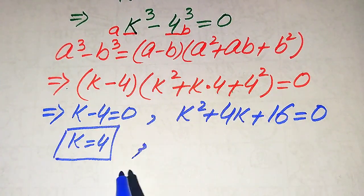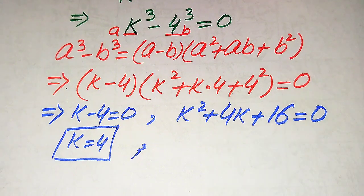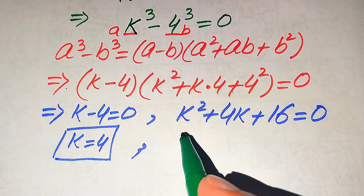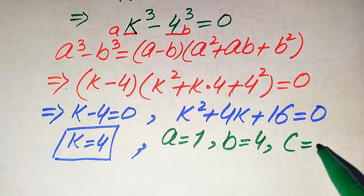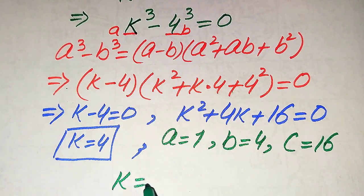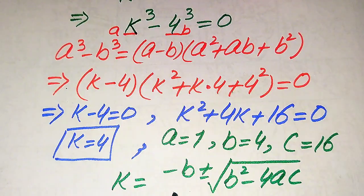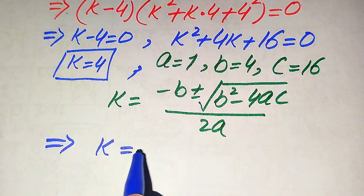The equation k squared plus 4k plus 16 equals 0 is a quadratic in k. There are three methods to solve a quadratic: factorization, completing the square, and the quadratic formula. Here we use the quadratic formula. The coefficients are: a equals 1, b equals 4, and c equals 16. The quadratic formula is k equals minus b plus or minus the square root of b squared minus 4ac, all divided by 2a.